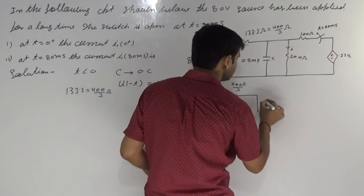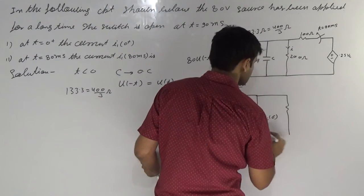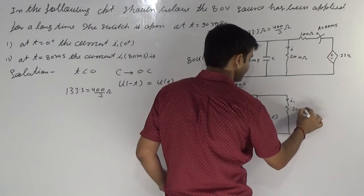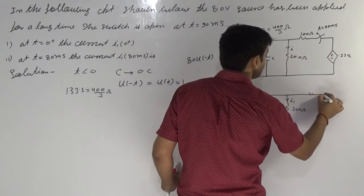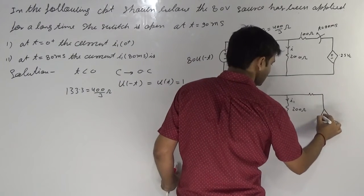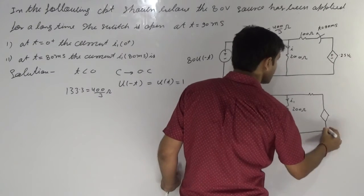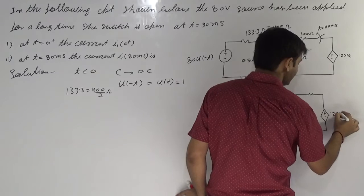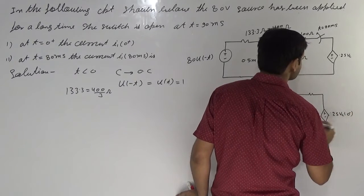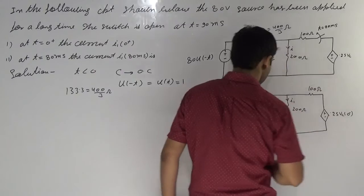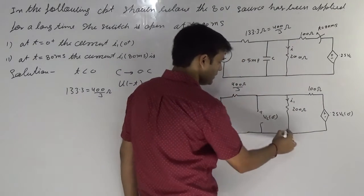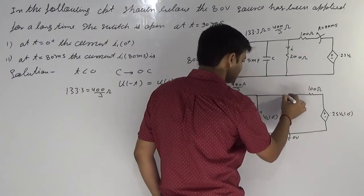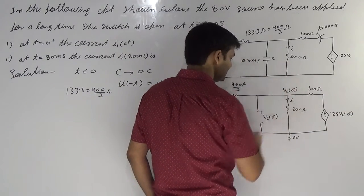This is zero. I1 is 200. Voltage across — this is dependent, so that's why 2.5 VC(0 minus), this is 100 ohm. If we suppose this is zero voltage, voltage across this one is also VC(0 minus).